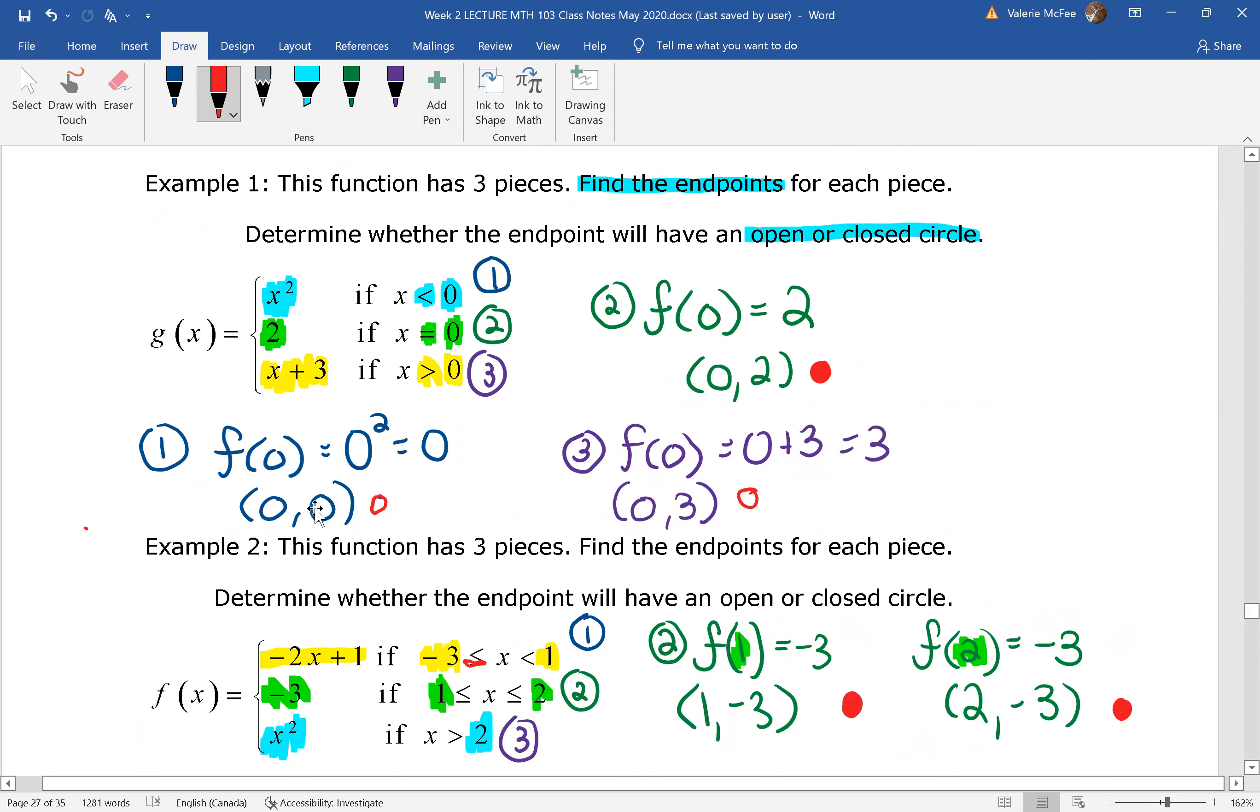We have an endpoint at (0,0), we have an endpoint at (0,2), and we have an endpoint at (0,3). We've also decided whether or not they need open or closed circles. So let's go back and see about graphing this function now.